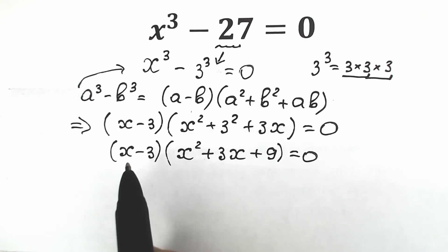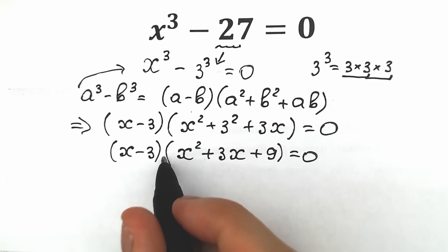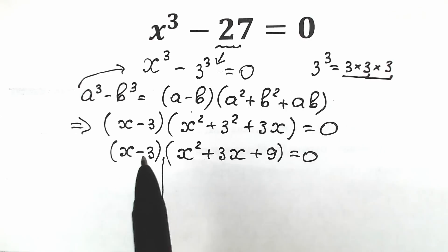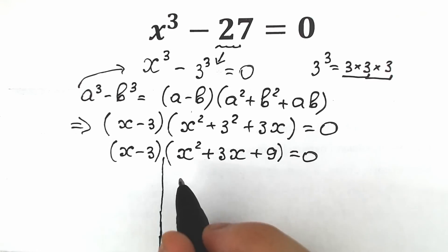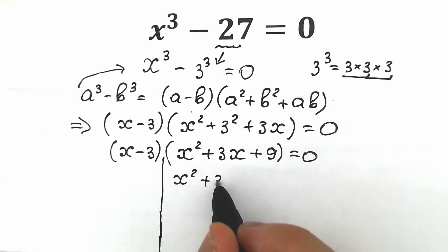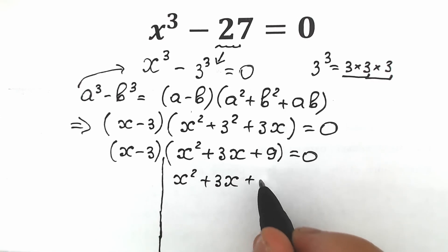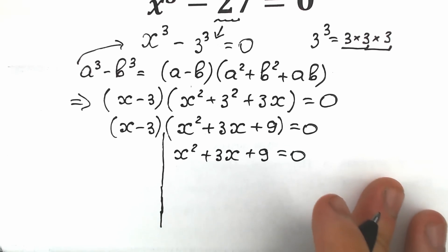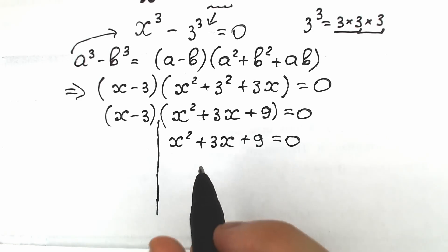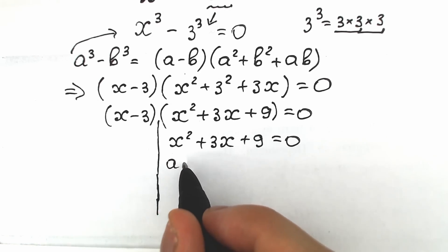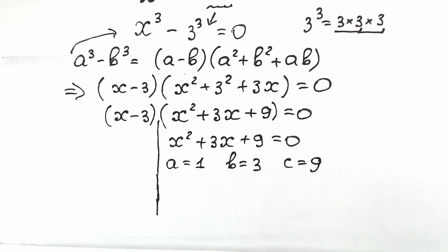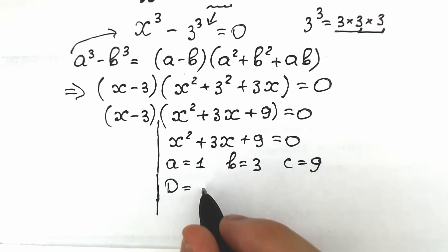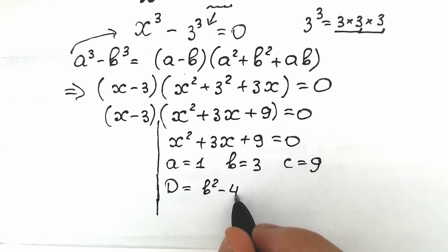Now, this is a really important moment. We have a product of two parentheses equal to zero, which implies either the first parenthesis equals zero or the second parenthesis equals zero. Let's start with the right parenthesis: x squared plus 3x plus 9 equals 0. This is a quadratic equation where a equals 1, b equals 3, and c equals 9.